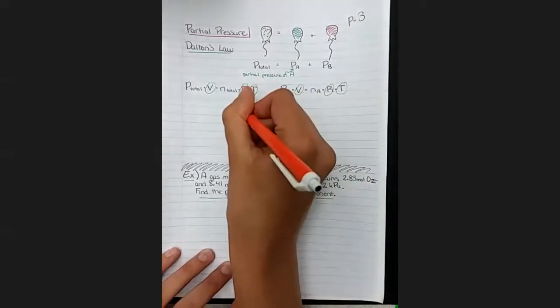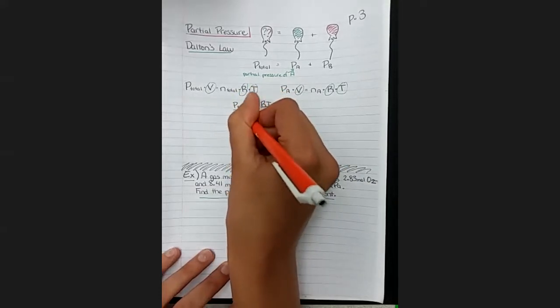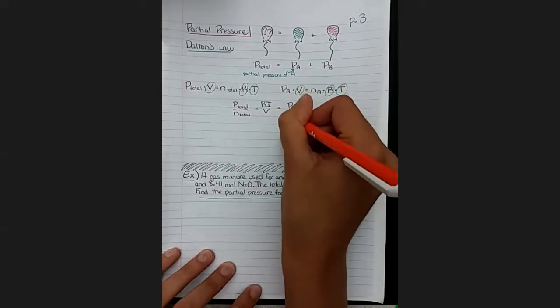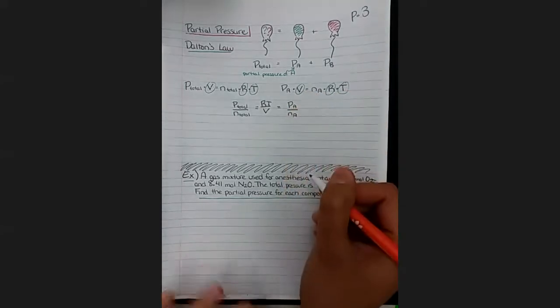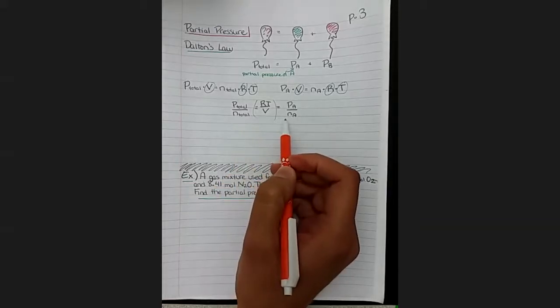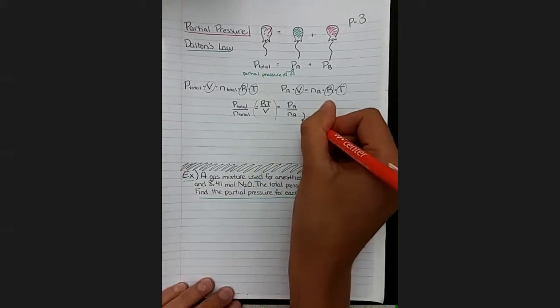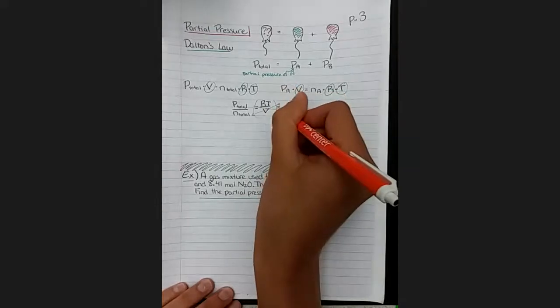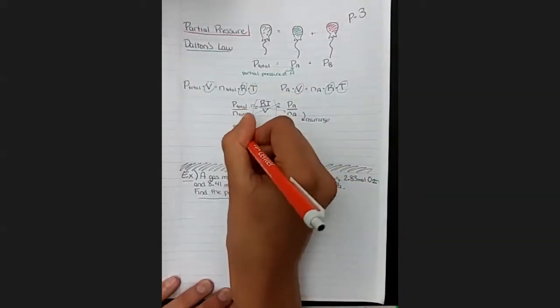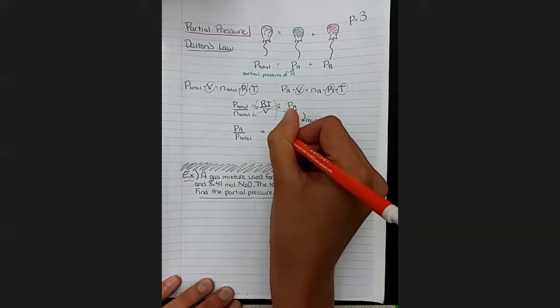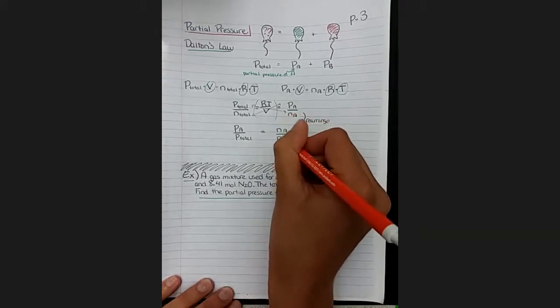So total pressure over total number of moles, and it's also equal to partial pressure of A over partial moles of A. Those are equal to the same thing. So now since they're both equal to this, we can work with just these two parts together. Let's rearrange them so all the same letters are on the same side. We'll do a cross multiply and rearrange so that we have the pressure of A over the total pressure equals the number of moles of A over the total number of moles.